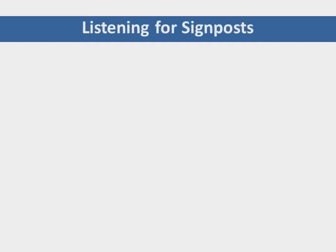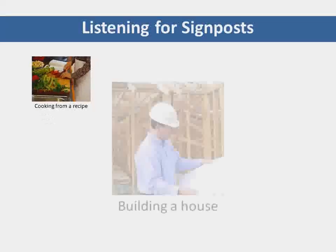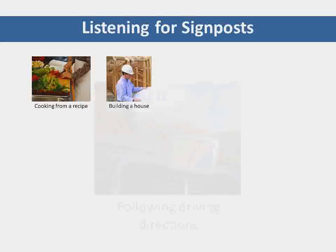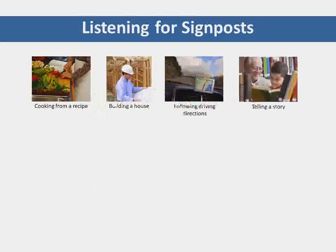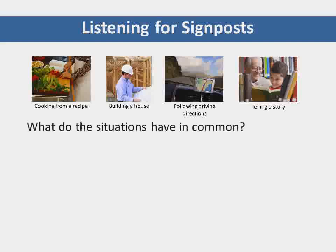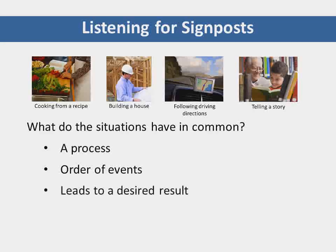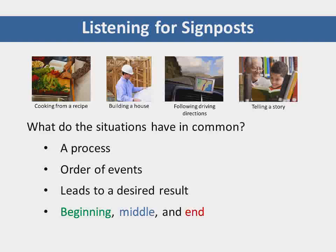Think about these situations: cooking from a recipe, building a house, following driving directions, and telling a story. What do they have in common? In all of these cases, there is a process or order of events that leads to a desired result. In other words, they all have a beginning, a middle, and an end.